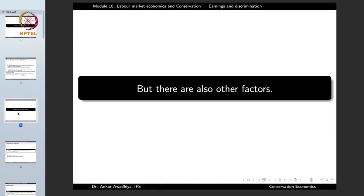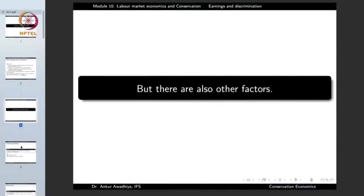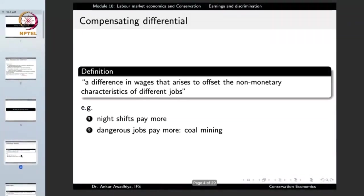Apart from the neoclassical theory of distribution, there are also a number of other factors that determine how much a person is paid. In this lecture we will look at some of those factors — the factors that modulate the predictions of the neoclassical theory.